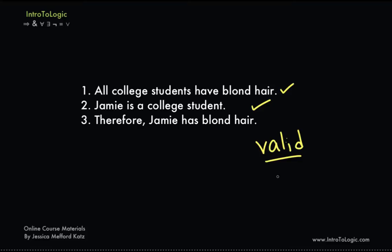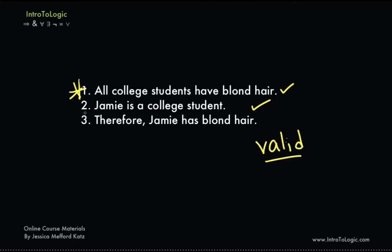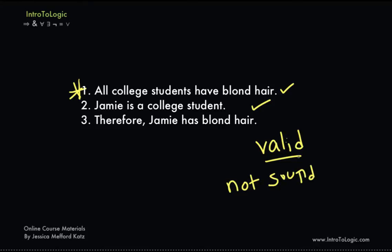Now the question is: is the argument sound? Premise one: all college students have blonde hair. Premise two: Jamie is a college student. Are these premises false? If one premise is false, the argument cannot be sound, because for an argument to be sound all premises must be true and the argument must be valid. Well, premise one is definitely empirically false — it is not the case that all college students have blonde hair. Simply visit a college campus and you'll find brunettes or redheads among the students. So this argument is not sound. It is valid but it is not sound.